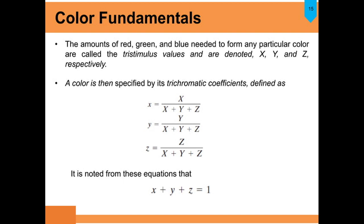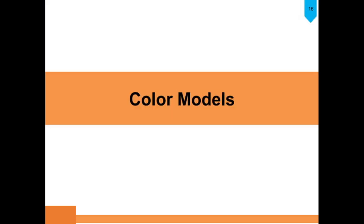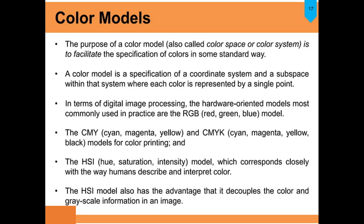The amounts of red, green, and blue needed to form any particular color are called tristimulus values, noted as X, Y, and Z. A color can be given by its trichromatic coefficients x, y, z, and if you add all primary color coefficients, the sum equals 1. A color model is used to facilitate the specification of colors in some standard way. It is a specification of a coordinate system and subspace within which each color is represented by a single point.